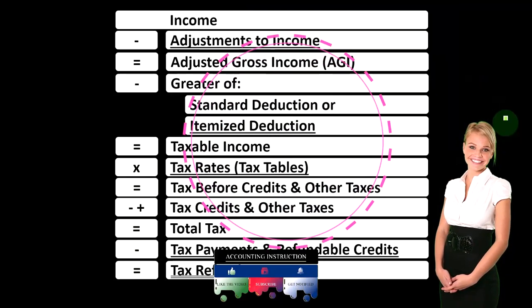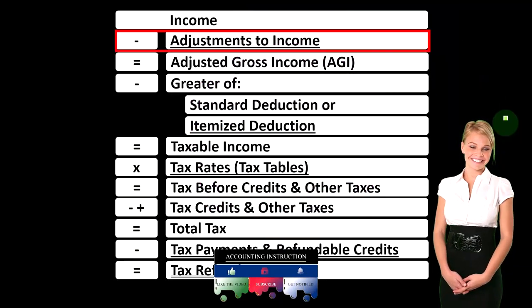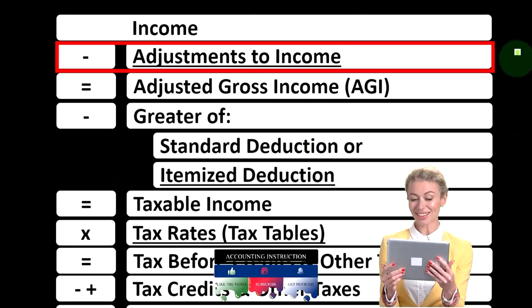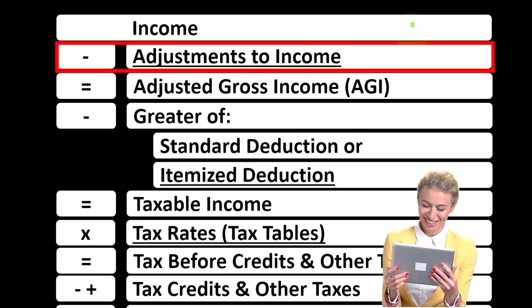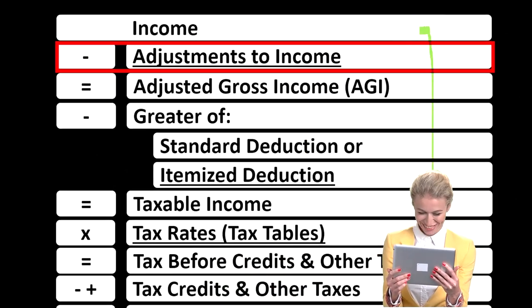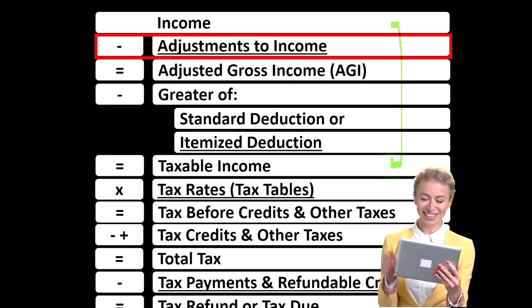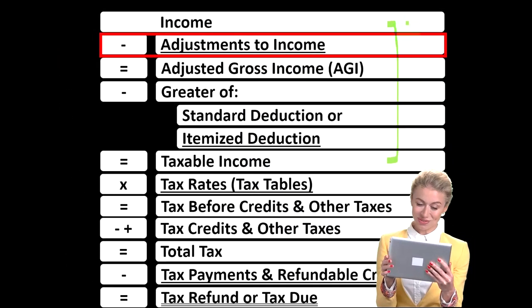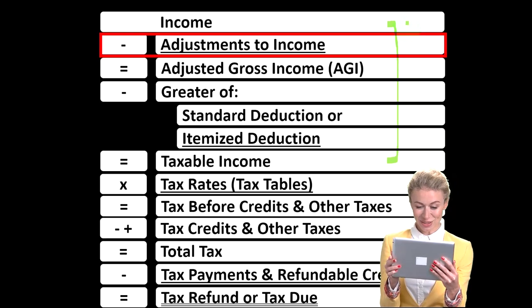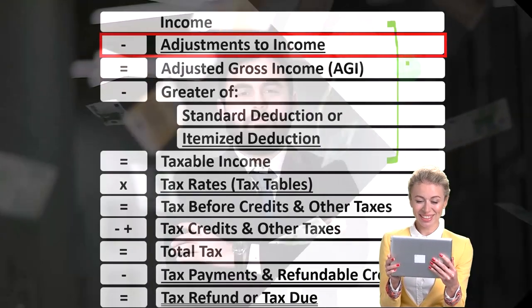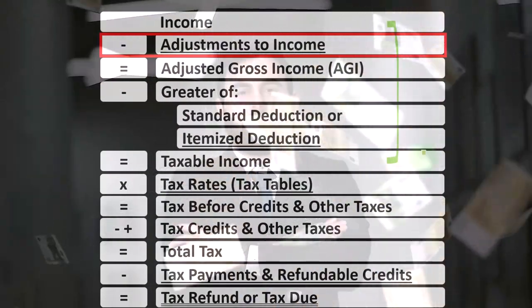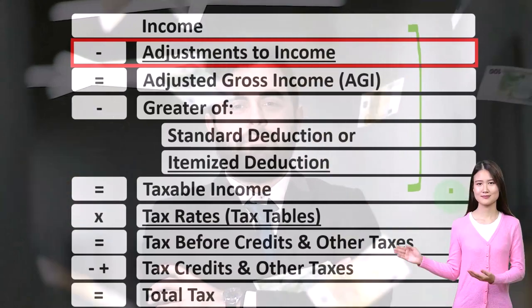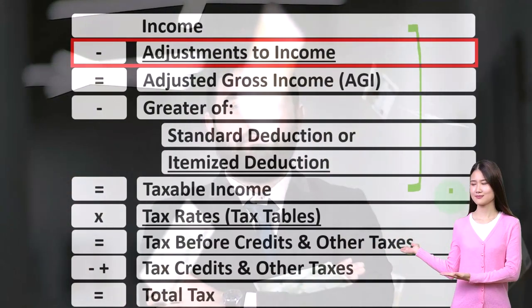Looking at the income tax formula, we're focused on line two — that being the adjustments to income — remembering that the first half of the income tax formula is in essence an income statement, although a strange one. We've got the income minus the equivalent of the expenses, those being the deductions, getting us down to the equivalent of net income, that being taxable income.